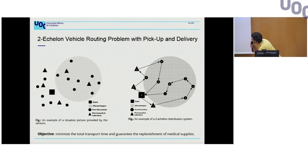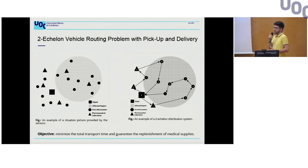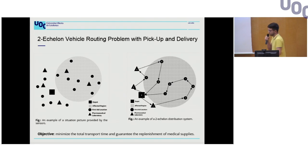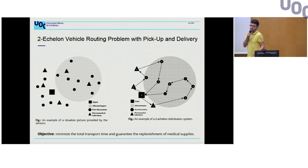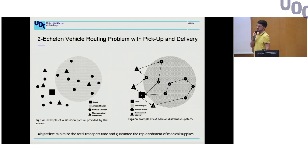Here we have a situation picture with sensors in the area. The gray area is the disaster zone. We provide distribution routes by first delivering raw products from the depot to pharmaceutical labs, then picking up medicines and drugs at those labs, and finally delivering them to first aid locations in the disaster area.